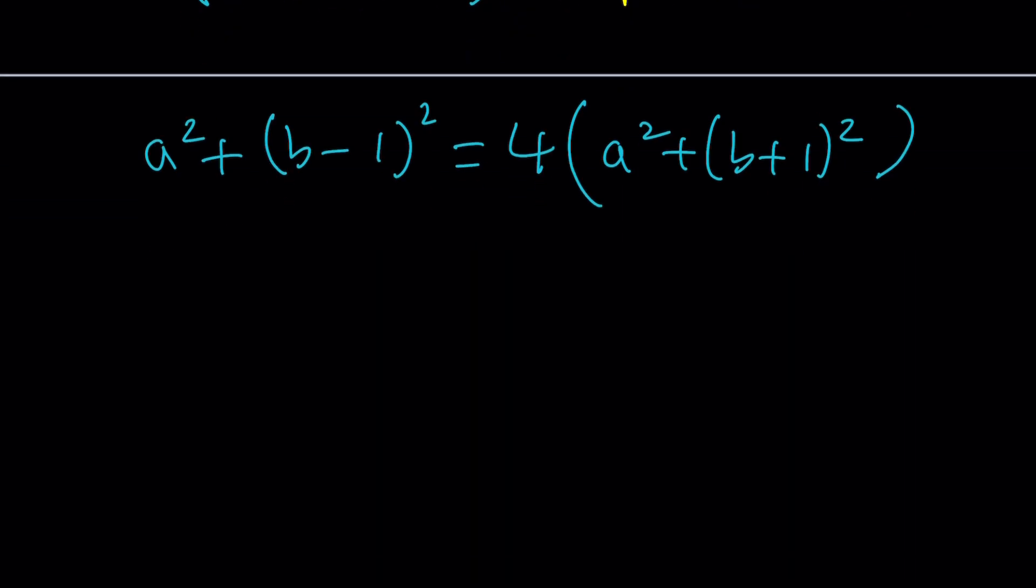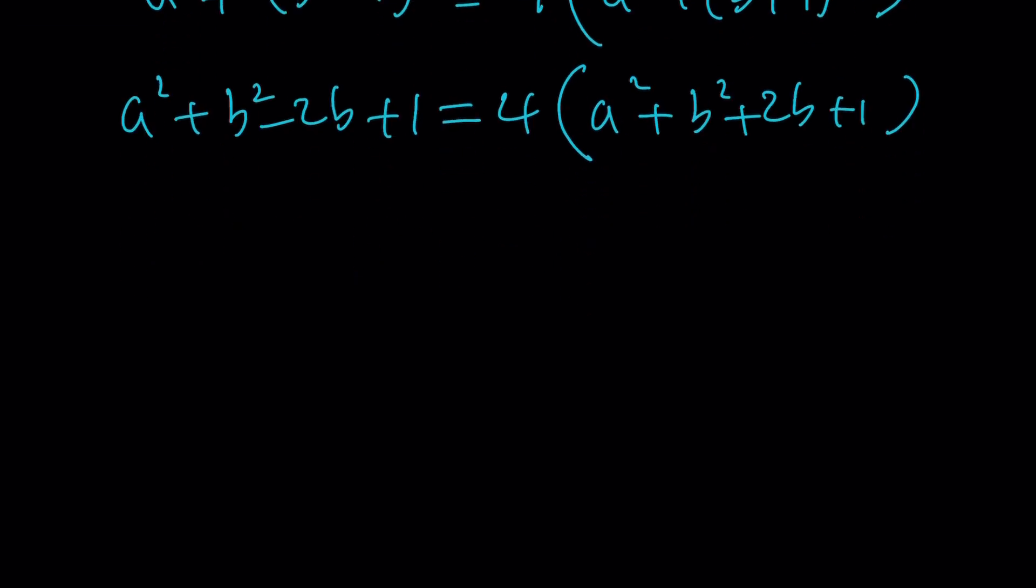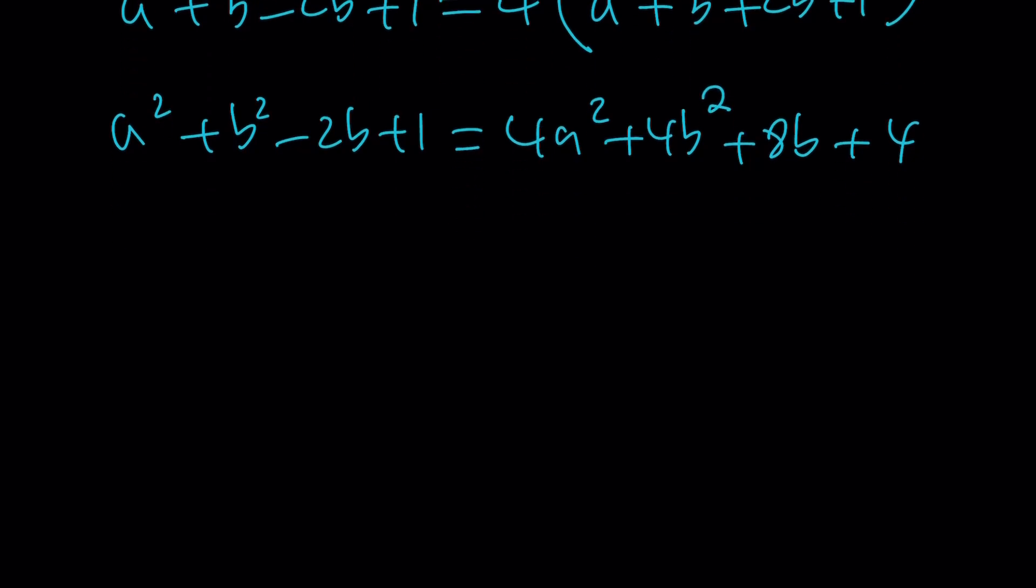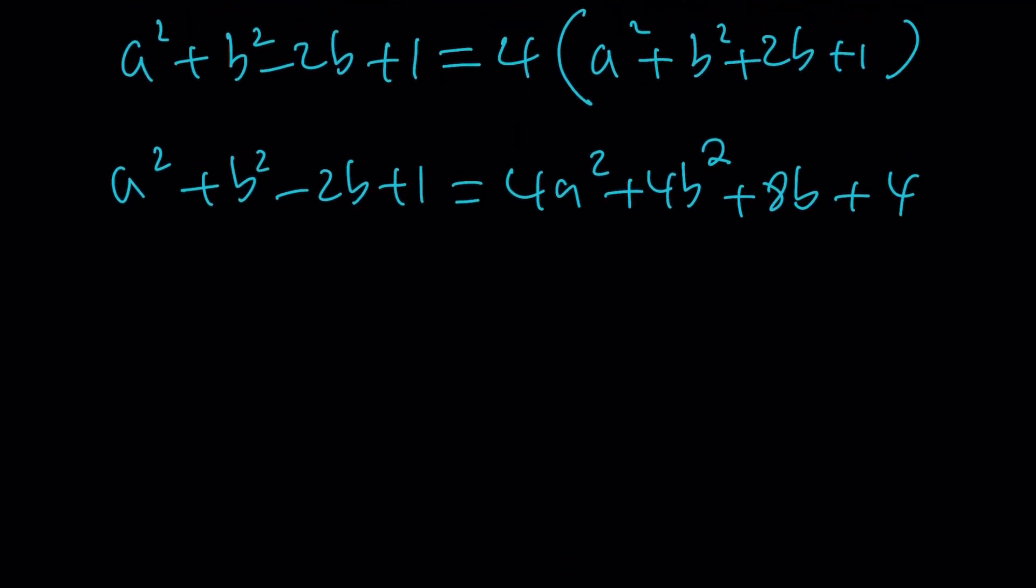Now, here's what we need to do. We need to expand everything and multiply by four and then put everything on the same side. That's what makes this problem fun. Okay, a squared plus b squared minus two b or not two b, allow me to do that equals four times a squared plus b squared plus two b plus one. Now, let's go ahead and distribute the four. That gives us four a squared plus four b squared plus eight b plus four. And now let's go ahead and put everything on the positive side of a squared and b squared.